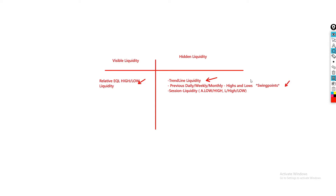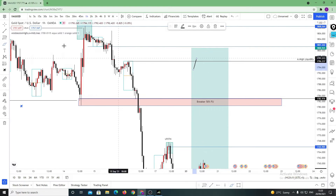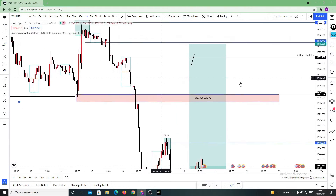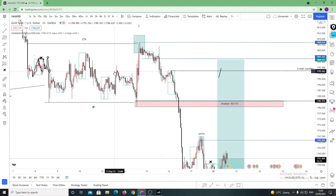One of the typical pitfalls aspiring traders fall victim to is the failure to select the right price location to trade off, ensuring the prospects of enough risk-reward, and most importantly, doing it in a consistent manner. What are liquidity levels? For big institutions and traders with a need to fill large orders, finding pockets of enough liquidity is absolutely essential. When these big players take positions in the market, they aim to be filled at the best possible price. However, given the size of their positions, they need to find enough counter forces to fill their orders.